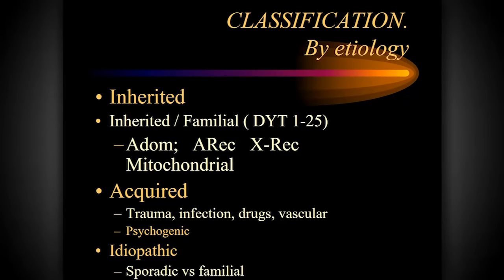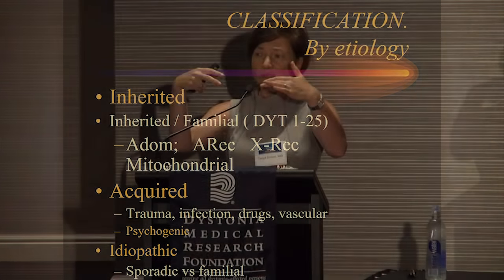Autosomal dominant means that if someone inherits the disease gene — regardless of whether the other gene of the pair is healthy — they have a propensity for the disease. An important genetic term is penetrance: people may carry the disease gene but never express it as a disease in their lifetime. So one disease gene plus one healthy gene can still result in the disease. These are families where you look for presence of disease in parent, child, and grandchild — vertical transmission.